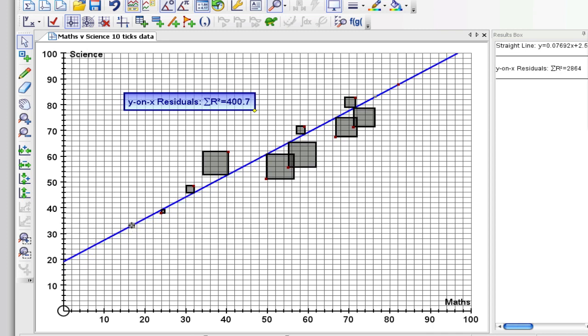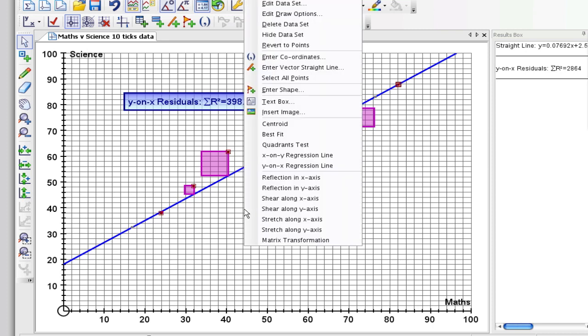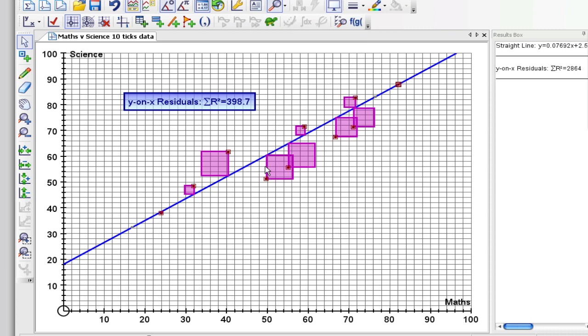It's starting to go up again. So it's somewhere around here I would imagine. And let's see what happens when I put in the line of best fit. So select my points, right click, let's show the y on x regression line. And we're nearly perfect. That's the actual y on x regression line there. The green one.